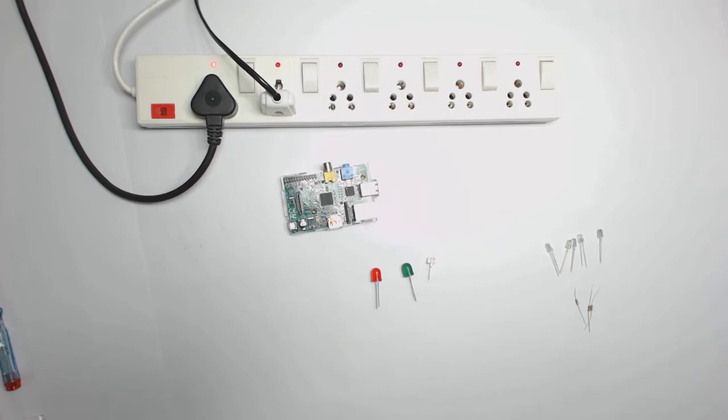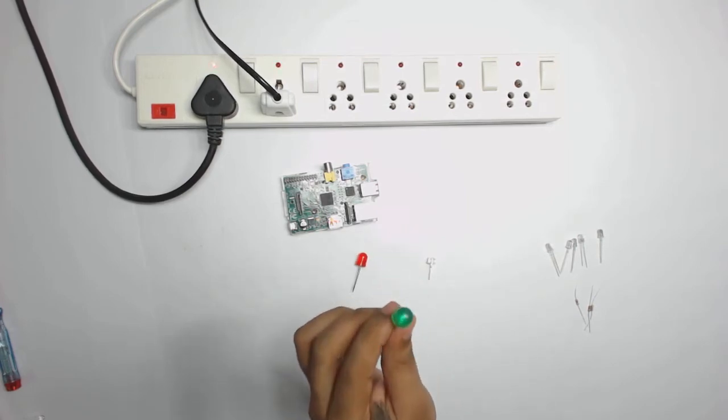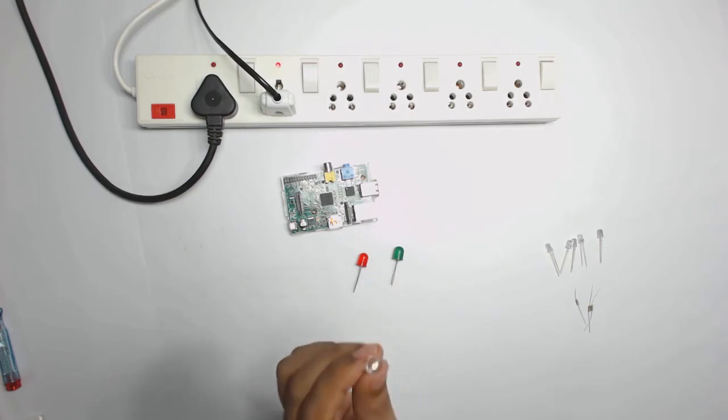Let's gather the list of hardware that we will require to build this project. The first one is LED in three different colors: Red, Green, and Blue.